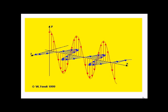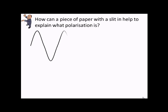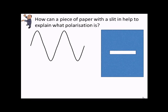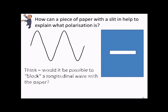So polarisation is about which orientation and blocking out certain orientations. So if you think about a wave travelling through a piece of paper with a slit in it, only one orientation, so in this example, side to side would be allowed to pass through.